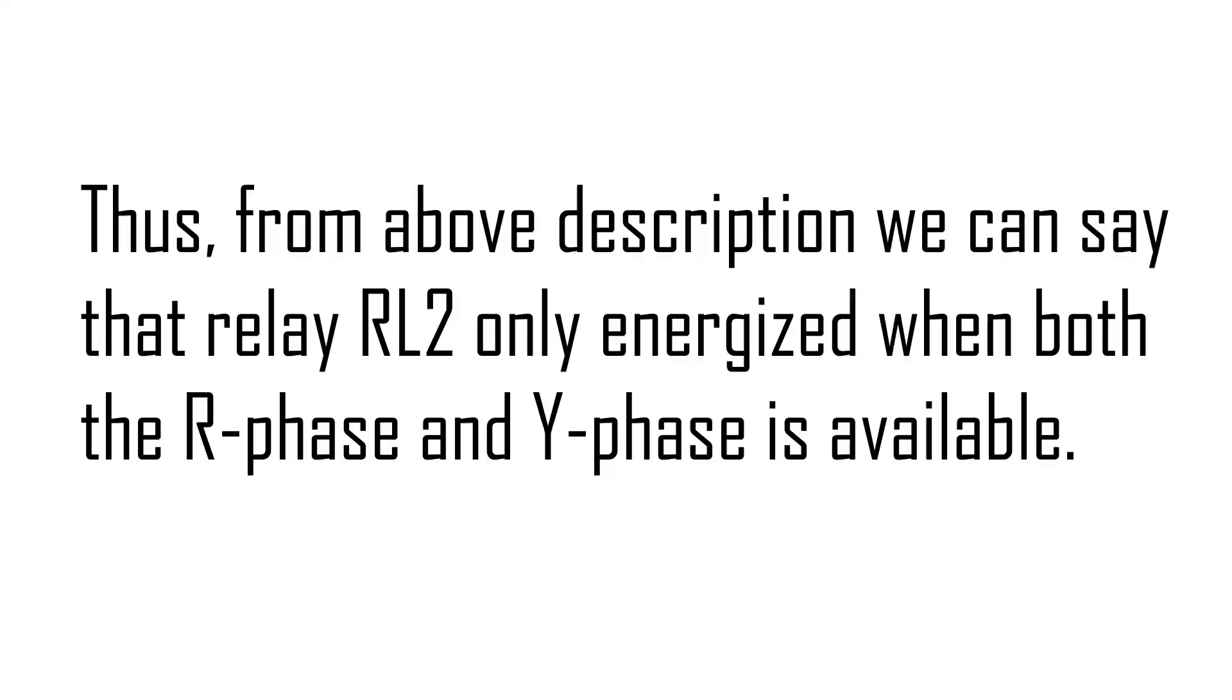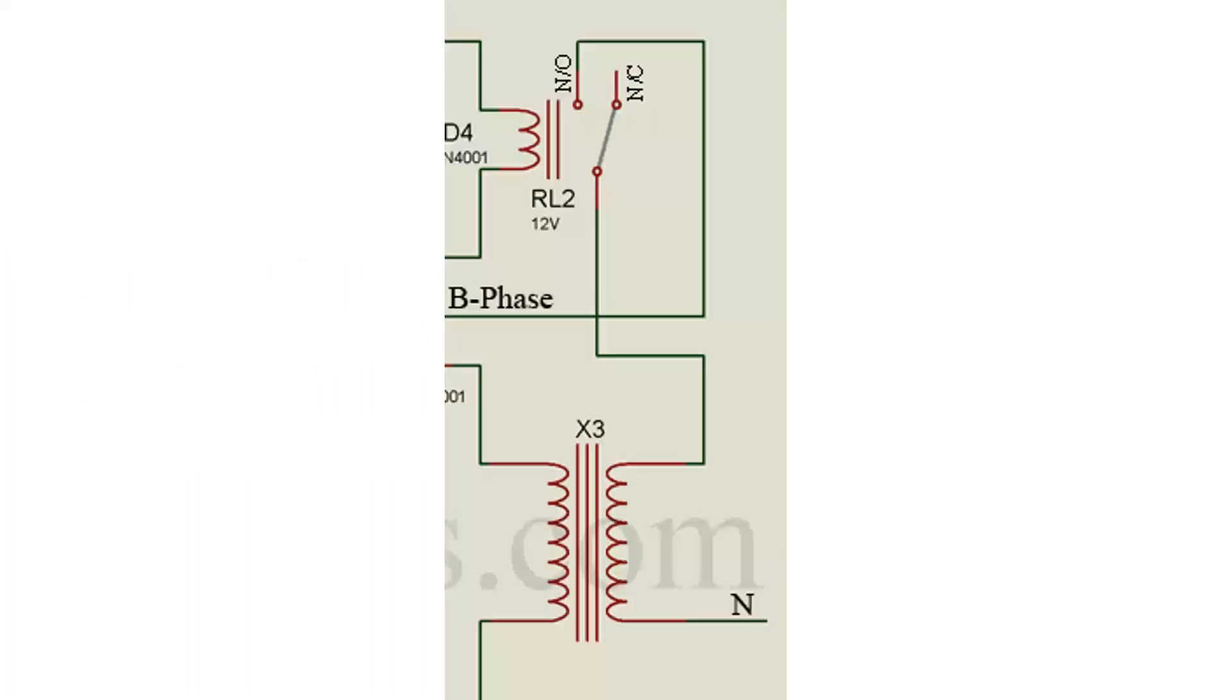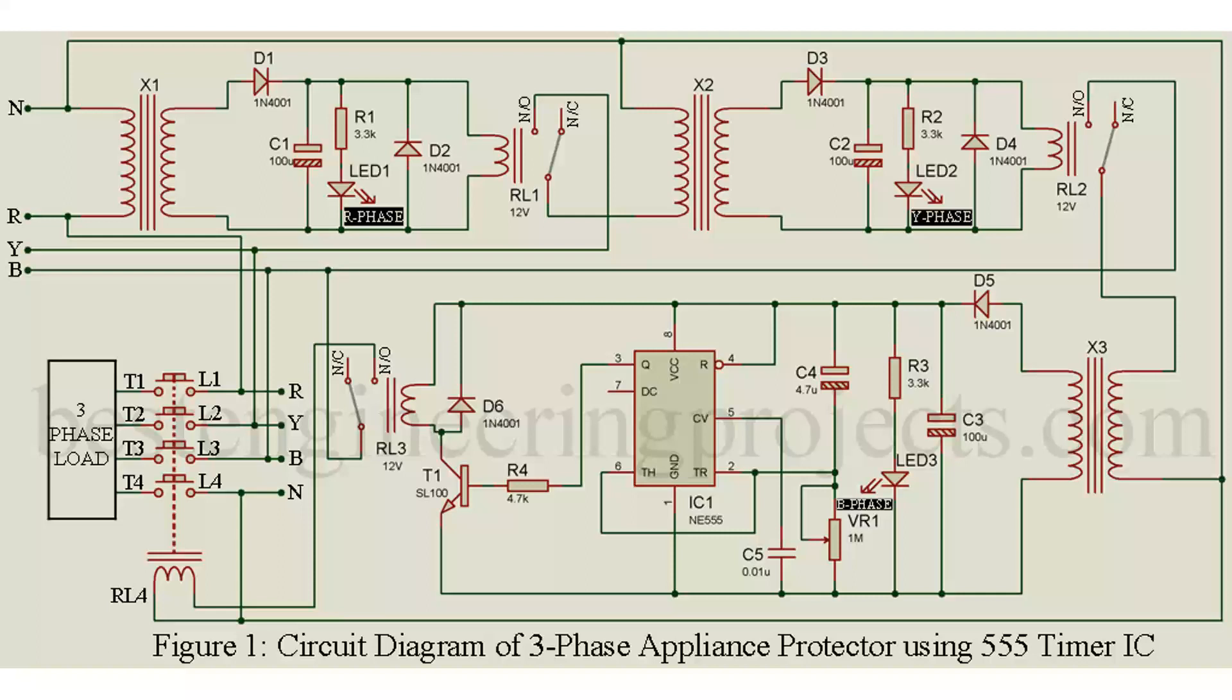Now let's see the connection of relay RL2. Connection of relay RL2 is same as above relay RL1. The NO pin, that is, normally open pin of relay is connected to B phase of mains line, and common pin of relay RL2 is connected to one terminal of primary winding of transformer X3, where other terminal of primary winding is connected to neutral line. From above description and circuit diagram, we can conclude that one terminal of each transformer primary winding is connected to neutral line. Voltage is available to primary winding of transformer X3 only when all the three phase, i.e. R, Y, and B phase is available.